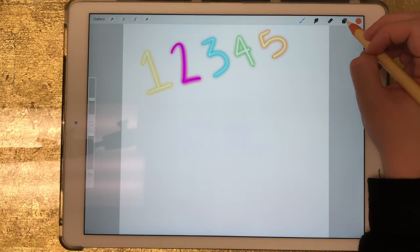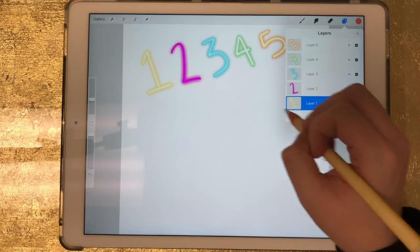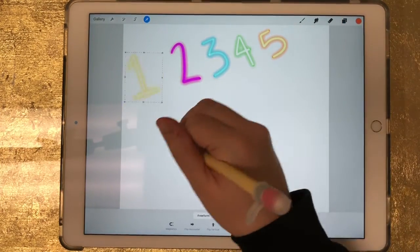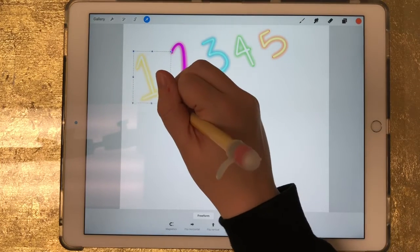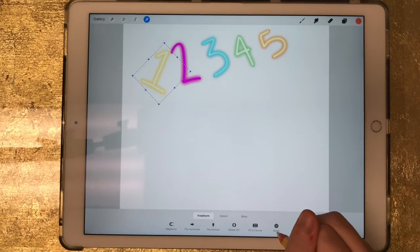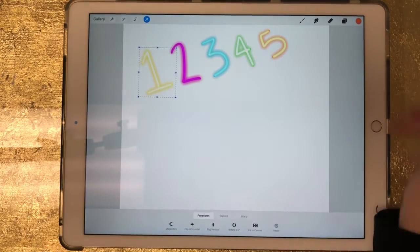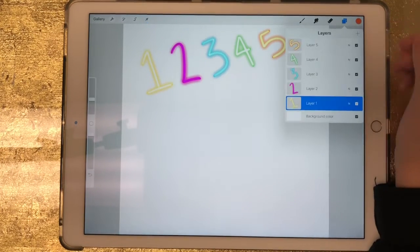If you want to—let's say I wanted to just move this one around right here—I would go to my layers and I would select where I can see the one, and now I can move that around on its own. I can resize it, I can flip it, I can do all of that stuff with just the number one.